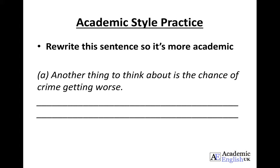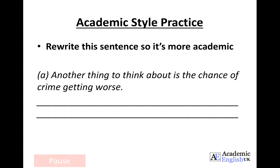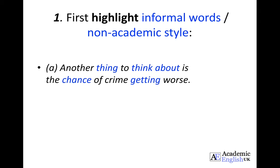Academic style practice. See if you can rewrite this sentence so it's more academic: 'Another thing to think about is the chance of crime getting worse.' Pause this slide and see if you can rewrite it. The first thing you should do is look at the sentence and highlight the informal or non-academic words. Here we have: 'thing', 'think about' (a phrasal verb), 'chance', and 'getting' as informal words.